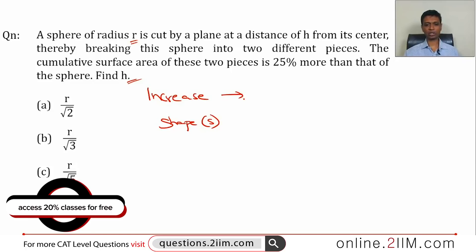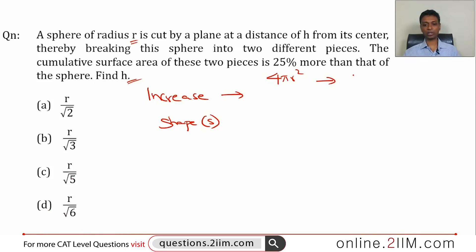Increase in surface area is 25 percent, so what was 4πr² should now become 4πr² plus 25 percent of 4πr², or should now become 5πr². Increase in surface area is πr². That is clear - 4πr² plus 25 percent of 4πr² is one-fourth of that, so πr² gets added.